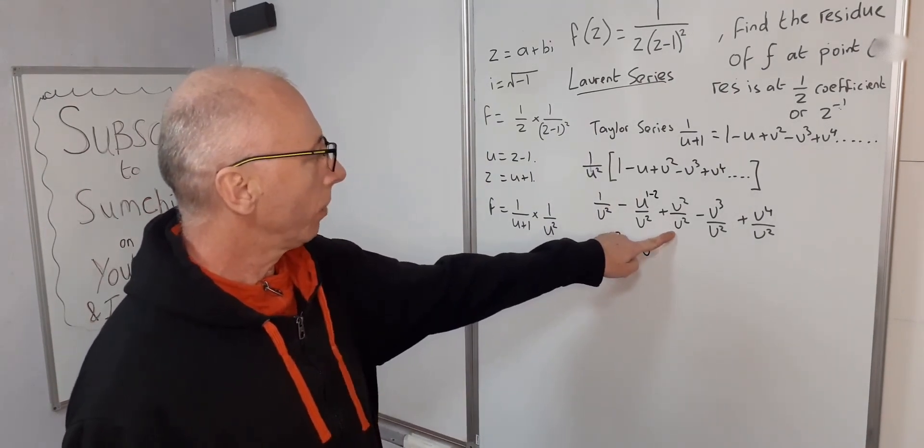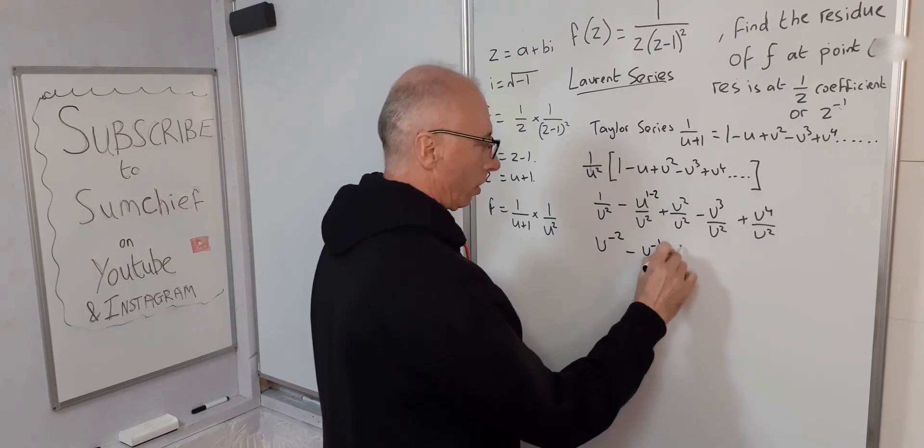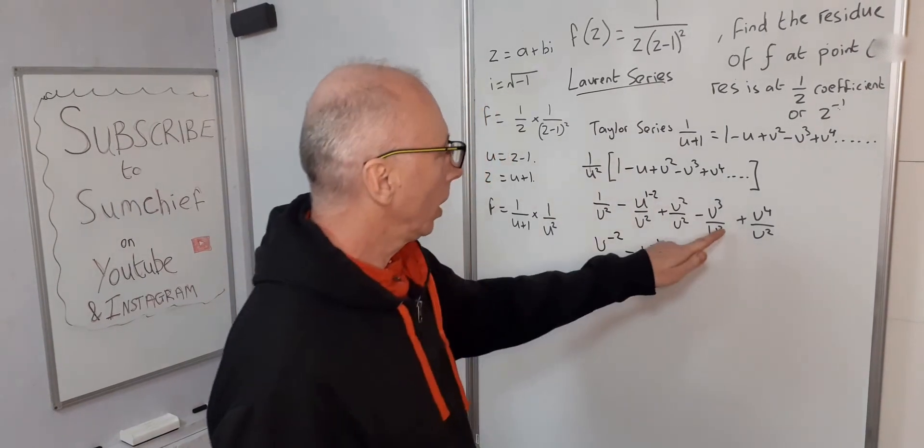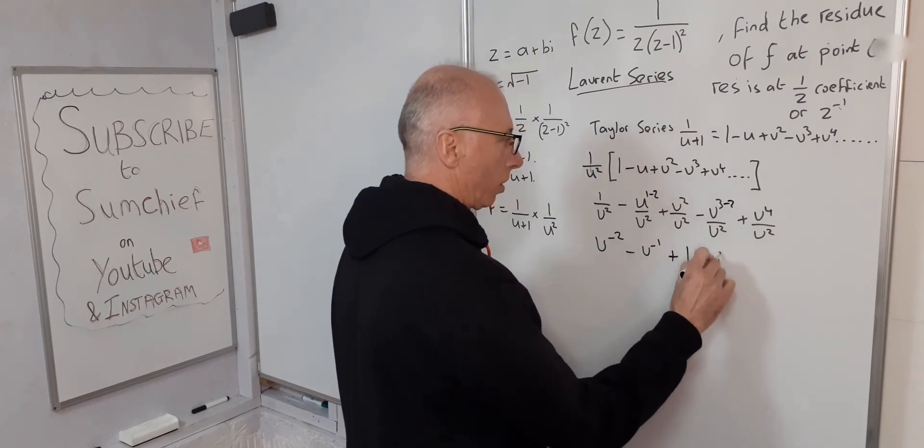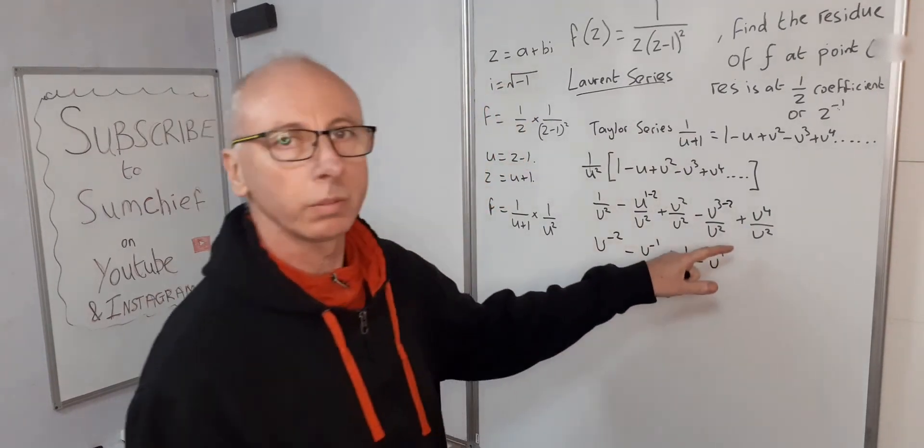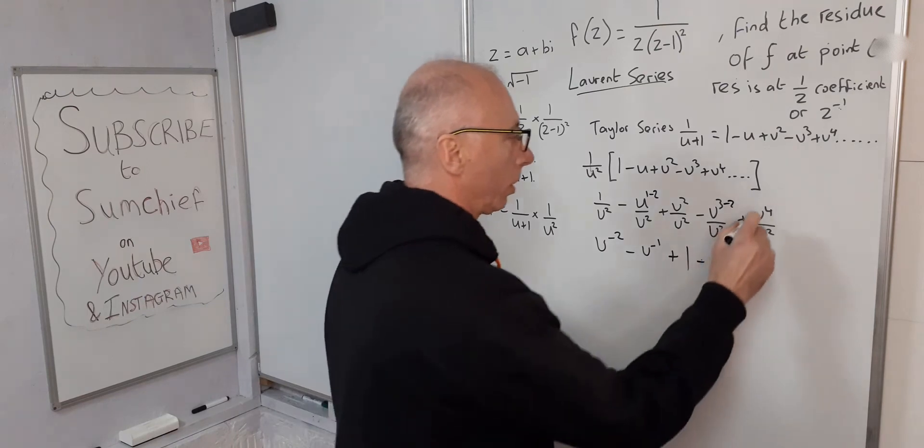This one here: u squared over u squared is just simply 1. Again here, 2 subtract 2, get minus u to the 1 which is just u. u to the 4 over u to the 2, again subtract 2, plus u squared.